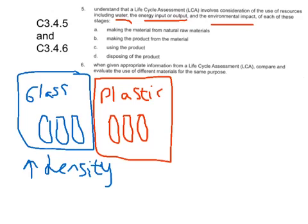And that's what you use to justify your answer. To recap, a life cycle assessment, or LCA, requires information about: making the material from raw materials, making the product from materials, using the product, and disposing of the product. All four of those things take into account how pollutant and how wasteful a particular material is.